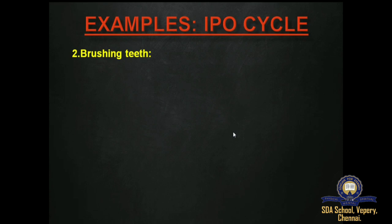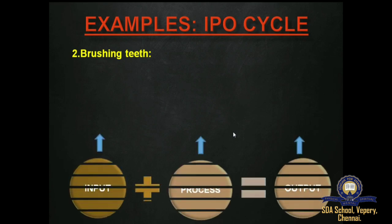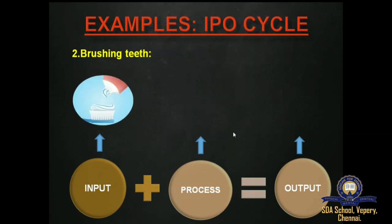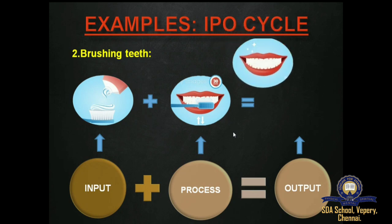The next example of the IPO cycle is brushing the teeth. Can you tell me which is the input in this example? Yes, very good — the brush and the paste are the input. The process is brushing the teeth, and the output is clean teeth.